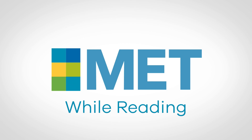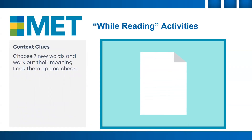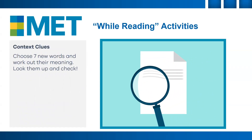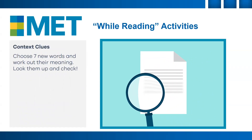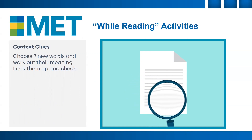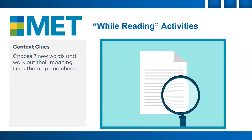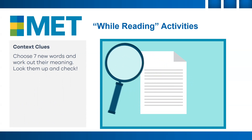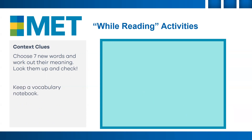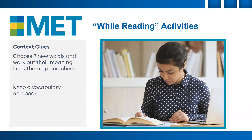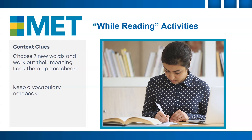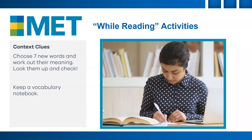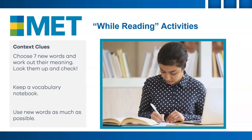While reading: Context clues — choose seven new vocabulary words from the text and work out what they mean based on clues in the surrounding sentences. Then look them up in a dictionary and check. Keep a vocabulary notebook to note down these new words and make sure to use them frequently.